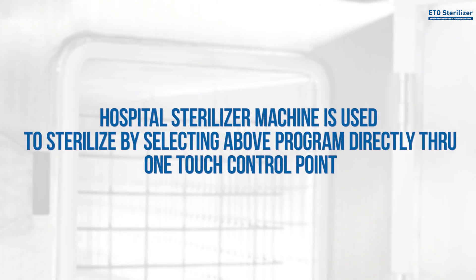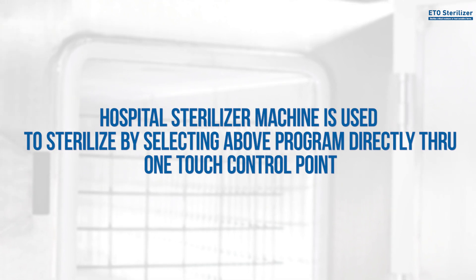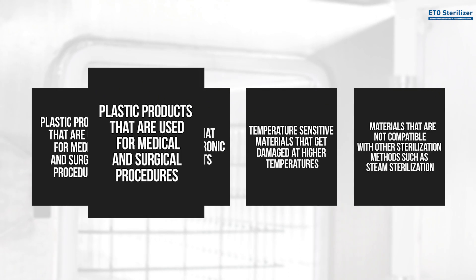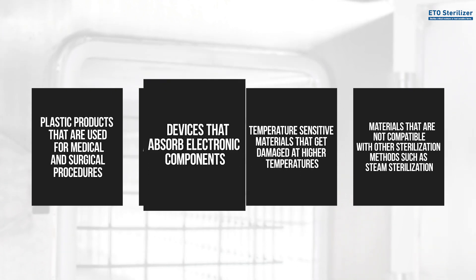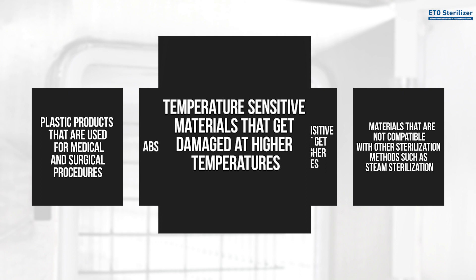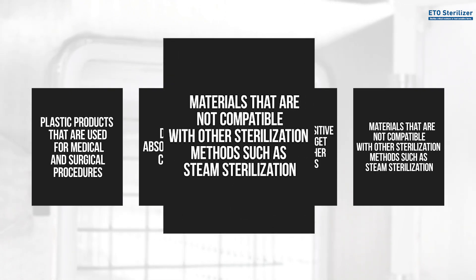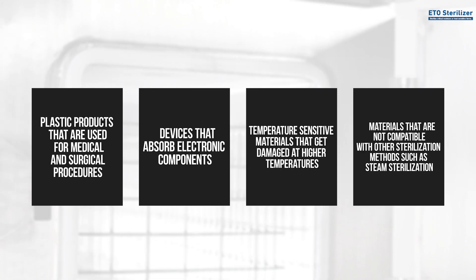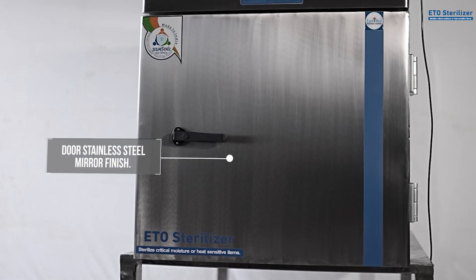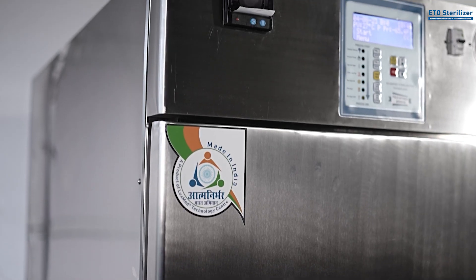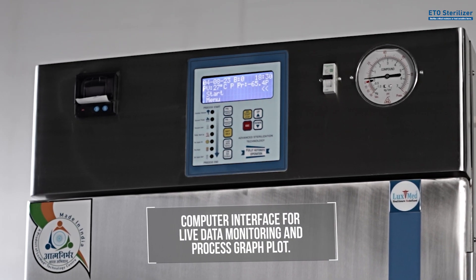The hospital sterilizer machine is used to sterilize by selecting the above programs directly through one-touch control. Items include plastic products used for medical and surgical procedures, devices with electronic components, temperature-sensitive materials that get damaged at higher temperatures, and materials not compatible with other sterilization methods such as steam sterilization. Features include a long-lasting SS316L stainless steel autoclave chamber, stainless steel mirror finish door, built-in thermal printer for process data, and computer interface for live data monitoring and process graph plotting.